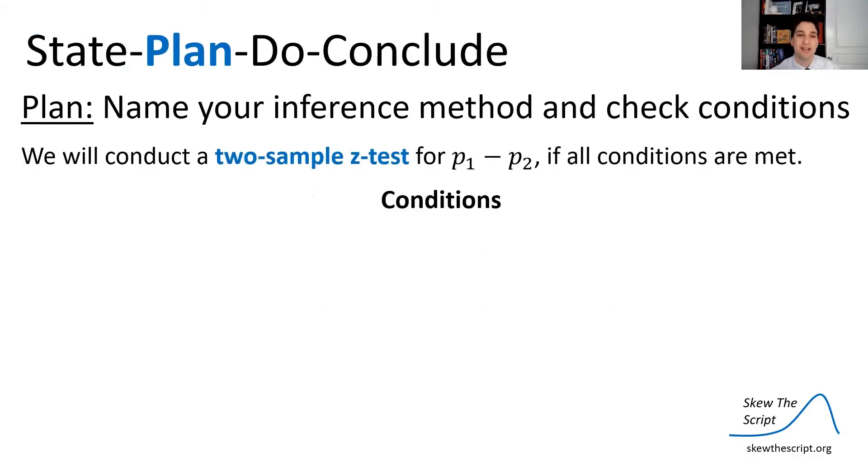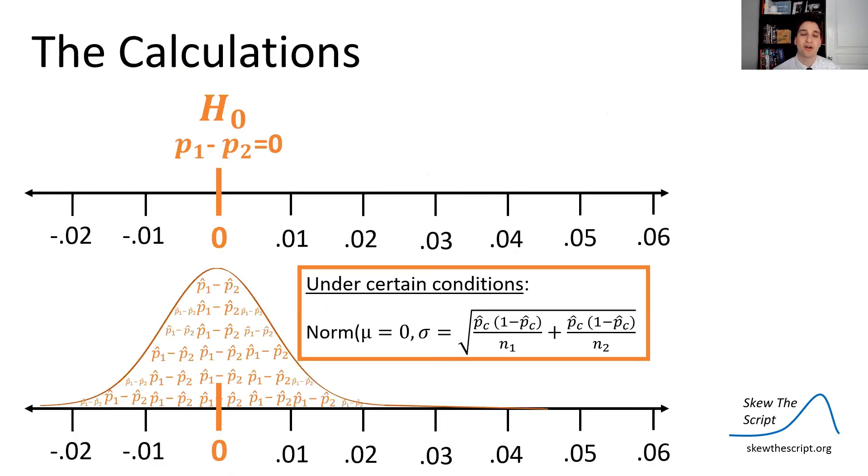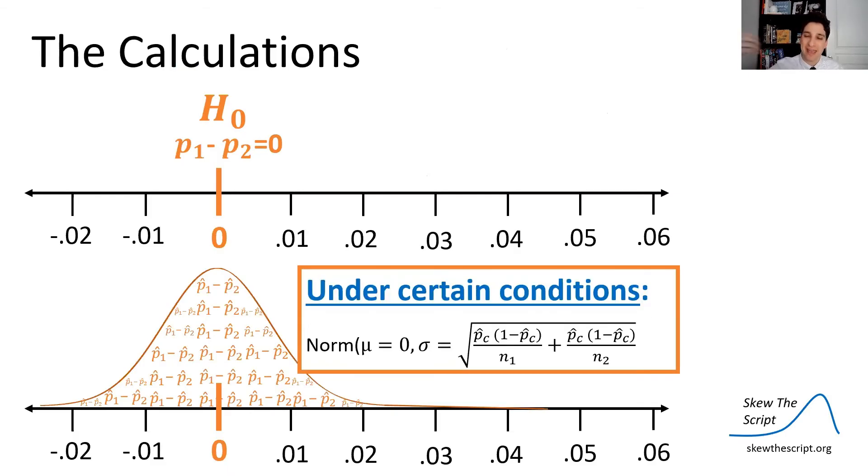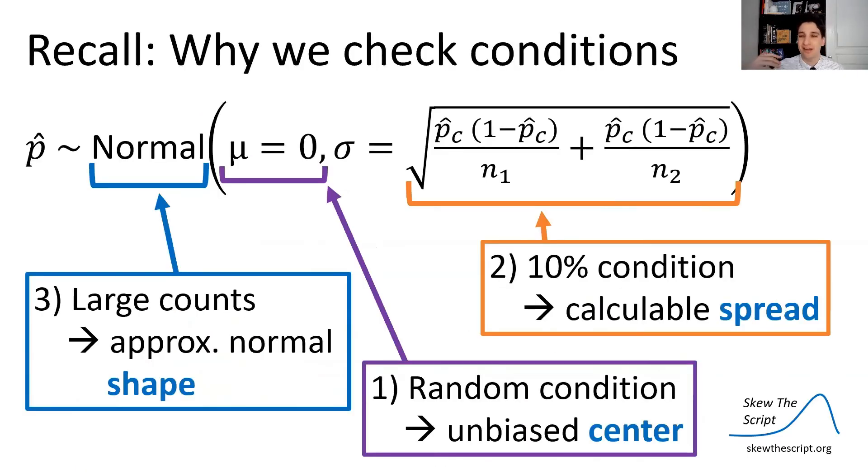Name your inference method and check conditions. We're going to conduct a two-sample z-test, remember this is two samples, two treatment groups, for the difference between these proportions if all conditions are met. Why are we checking conditions? Well, as always, we assumed a sampling distribution, and a sampling distribution is only normal under certain conditions, and here's what the conditions apply to. Remember, the random condition means you're unbiased center, 10% means you have a calculable spread, and then the large counts assures you that you have an approximately normal sampling distribution.